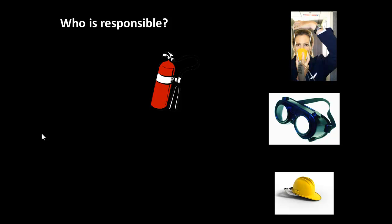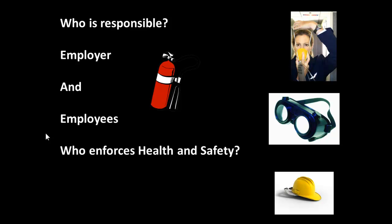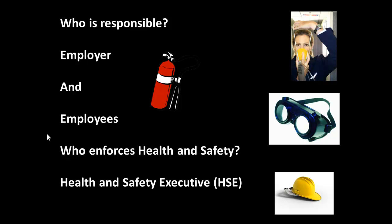Who is responsible for all of this? If you look at the fire extinguisher, the employer should be providing it, and if it is on an airplane, the owner of the airplane should be providing all the safety equipment there. But safety equipment on its own is of little use, so employees are also responsible for safety in the workplace. Who enforces health and safety? That can vary from one country to another, but in the United Kingdom it's the Health and Safety Executive, often known simply as the HSE.